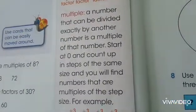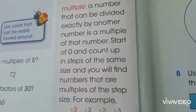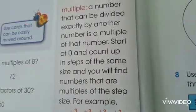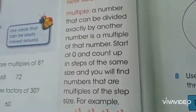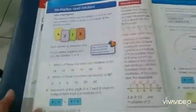Jadi, dimulai dari 0. Kalau misalnya kalian pilih satu angka, misalnya 2. 0 tambah 2, 2. 2 tambah 2 lagi, 4. Jadi, seperti perkalian 2. That's the meaning of factor and multiple.